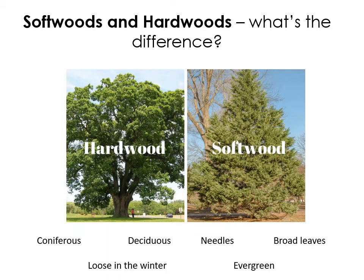Softwood trees have needles, so they look a little bit like Christmas trees rather than normal leaves. Softwoods are also evergreen, meaning they keep their needles all through the winter — they're green all the way through the year. Hardwoods have broader leaves, more like the leaves you'd expect to see on larger trees, and they lose those in the winter. When you see a tree with no leaves on it, it is likely a deciduous tree, and deciduous trees are hardwood.